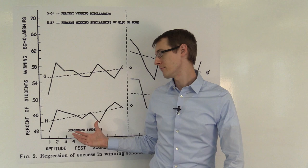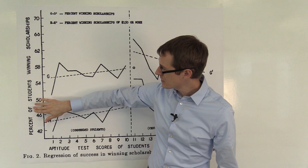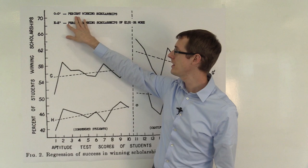So, what's on the vertical axis? That's the percentage of students winning scholarships. So, we've got two lines, which are up here in almost illegible words.